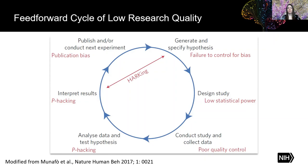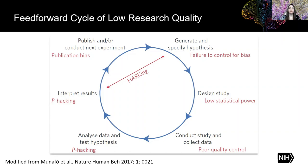In red, for example, you may fail to control for bias, have low statistical power, or poor quality control. P-hacking may be involved, or HARKing — hypothesizing after results are known — and then there's the issue of publication bias. Each of these can occur without any intentional fraud or misconduct, but all of these issues work together to weaken the strength of scientific evidence in the literature.